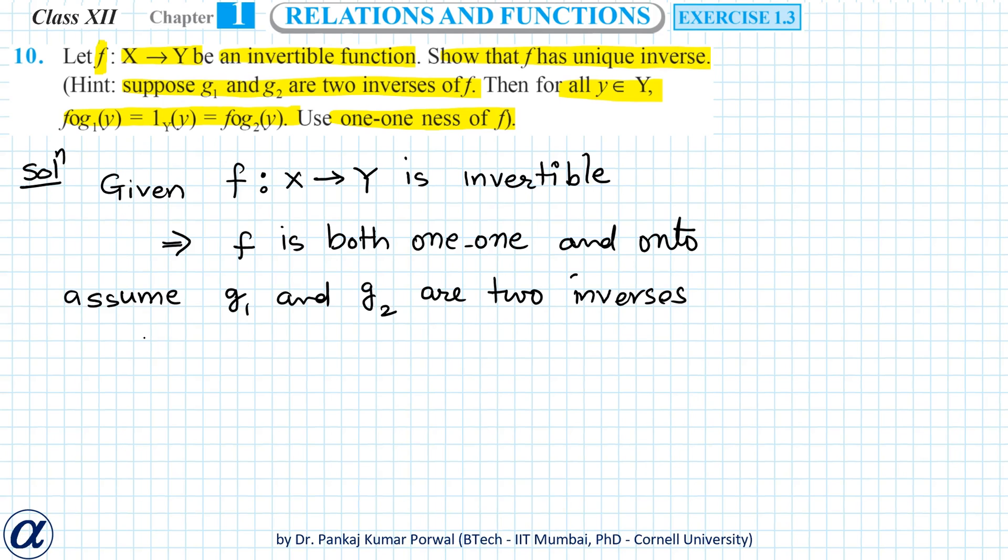We know that composition of a function and its inverse equals identity function. So f∘g1(y) is equals to identity function of y and f∘g2(y) is also equals to identity function of y.